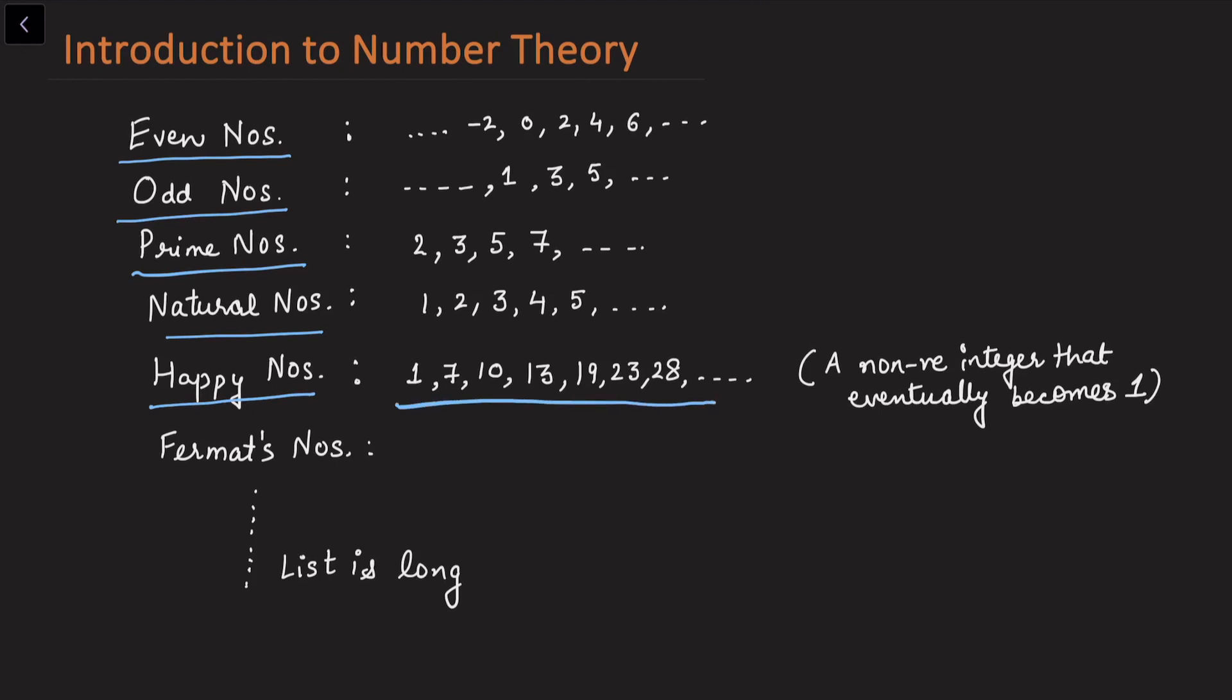Happy numbers have this sequence: 1, 7, 10, 13, and so on. Why do we call this a happy number? Here's an informal definition: a non-negative integer that eventually becomes 1 is called a happy number.